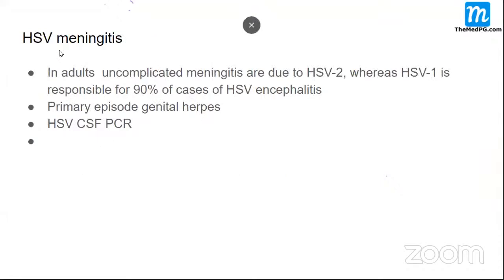HSV produces both encephalitis and meningitis. In adults, uncomplicated meningitis is due to HSV-2, while HSV-1 is responsible for 90% of HSV encephalitis. Remember: HSV-1 causes encephalitis, HSV-2 causes meningitis. HSV-2 is associated with genital herpes; HSV-1 with orofacial herpes. The primary episode is genital, and CSF PCR is helpful for diagnosis.